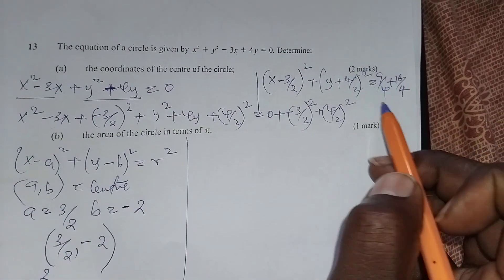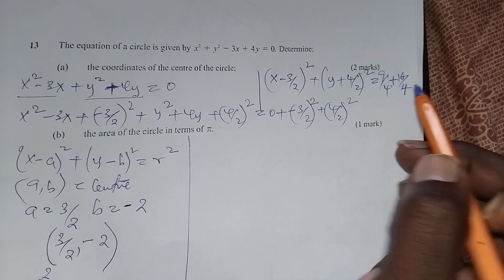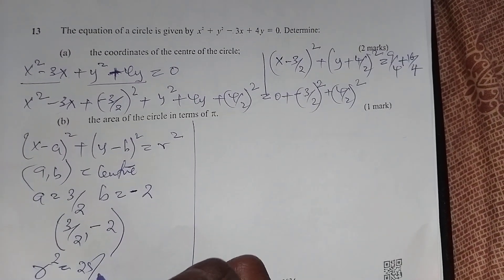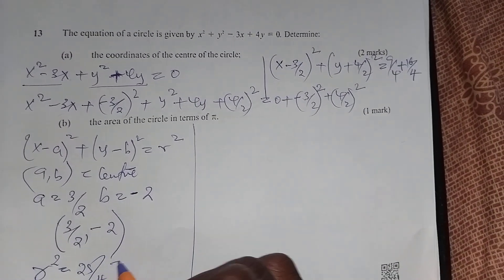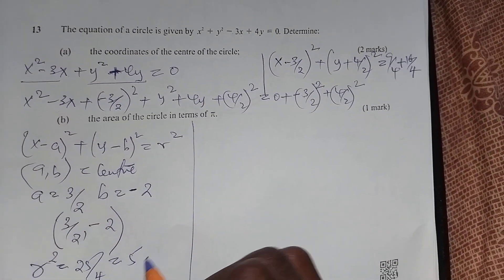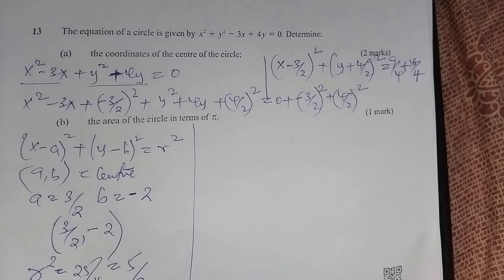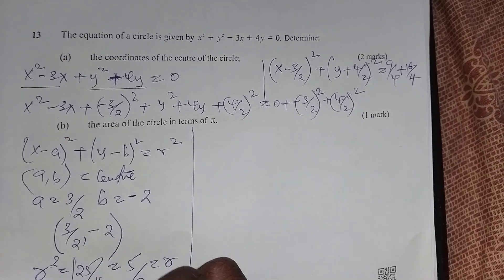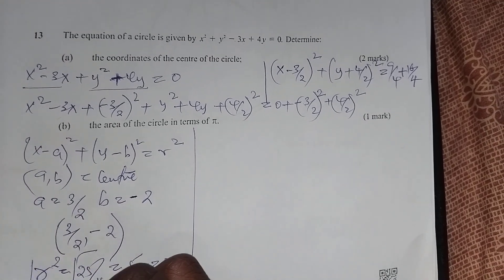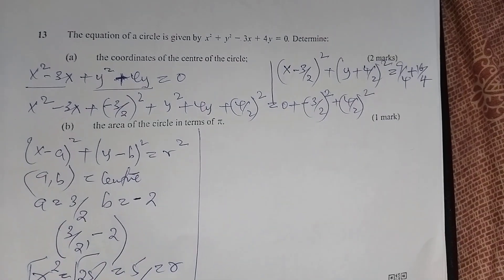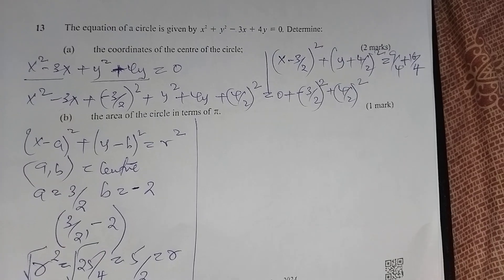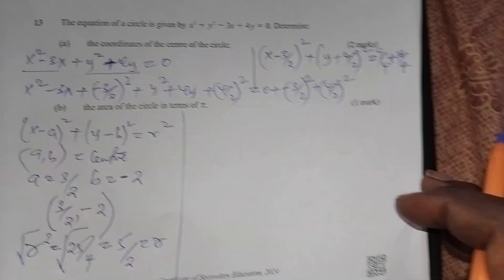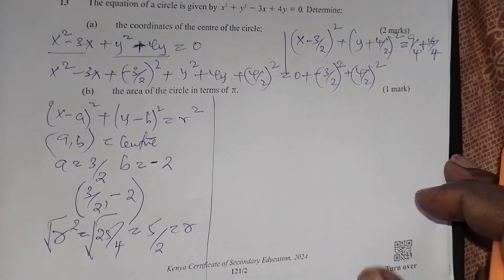If you want the radius, r squared equals 9 over 4 plus 16 over 4, which gives 25 over 4. Taking the square root on both sides, the radius r is 5 over 2.